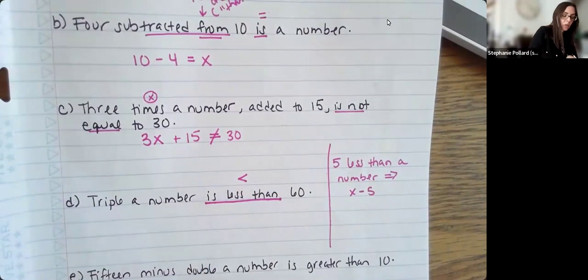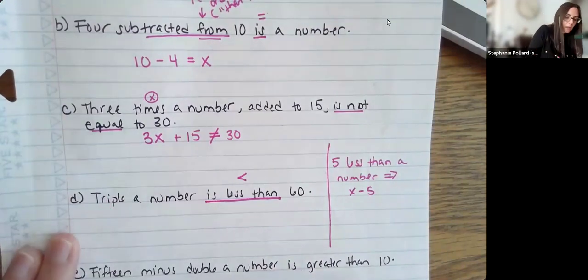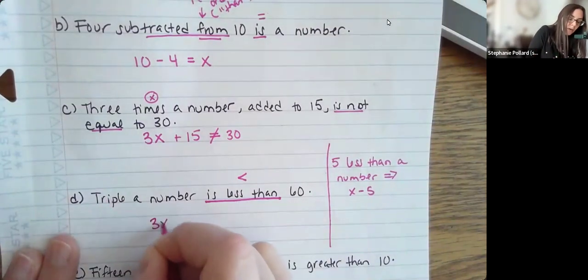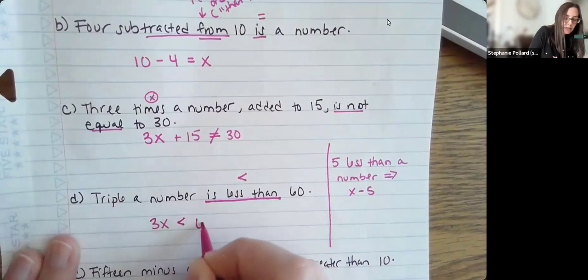So this is going to be triple a number. Triple means 3 times something. So 3 times a number is less than 60.